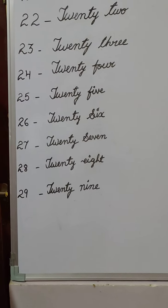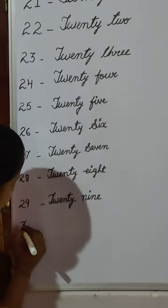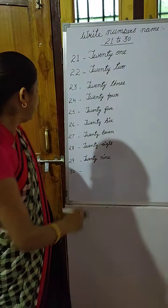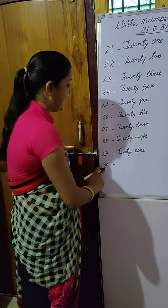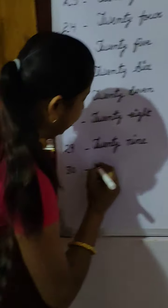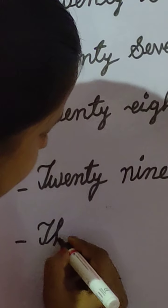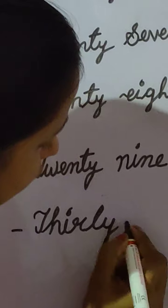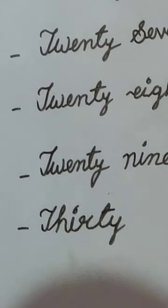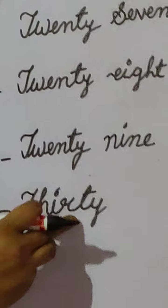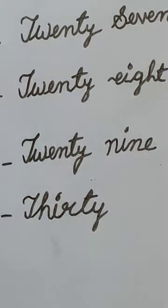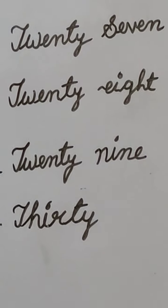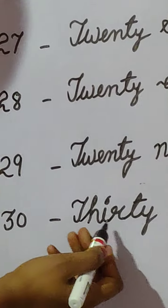Then, after 29, what do we have to write? 30. Spelling of 30. You don't know the spelling of 30, do you? We have to write the spelling of 30. It will start from T. Spelling of 30 is T, H, I, R, T, Y. Spelling of 30 is children? T, H, I, R, T, Y. Once again — T, H, I, R, T, Y. Spelling of 30 is T, H, I, R, T, Y. THIRTY.